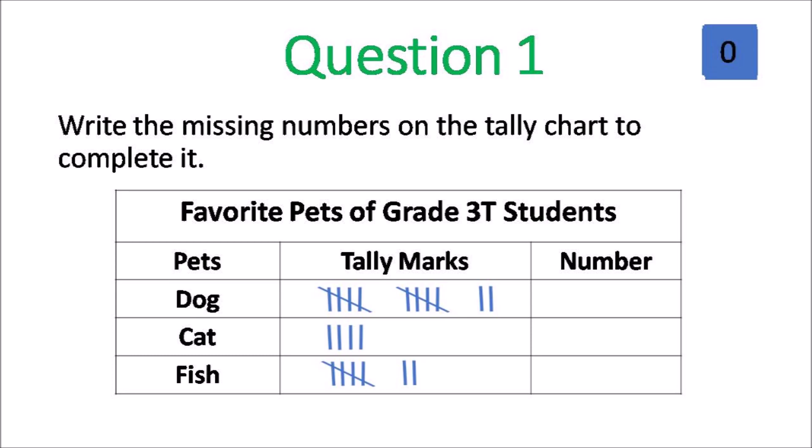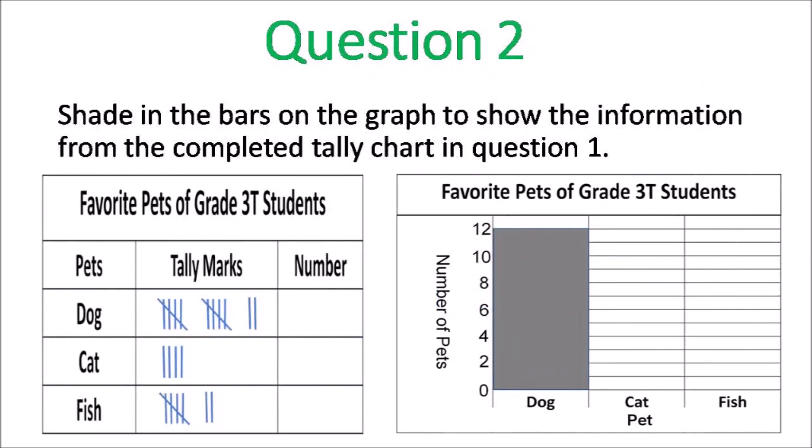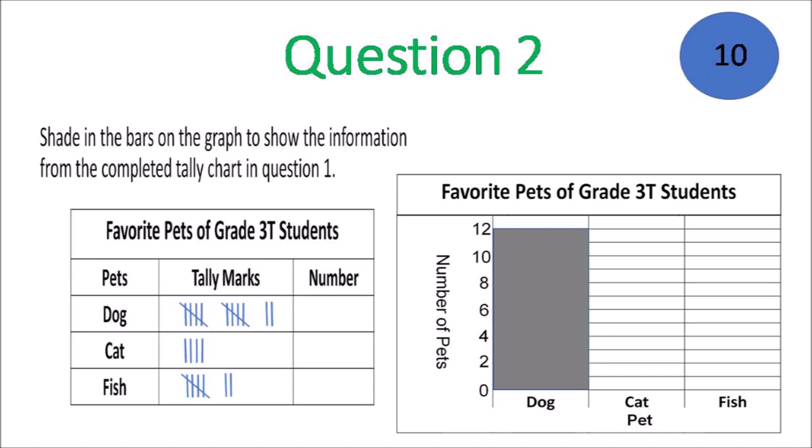We move on to question 2. Shade in the bars on the graph to show the information from the completed tally chart in question 1. So you should have put in the numbers on the tally chart, but now put the bars in to represent the numbers. Shade it in. The first one was done for you.